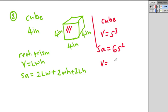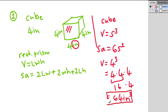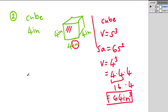For the volume we do V equals s cubed, which is 4 cubed: 4 times 4 times 4. Four times 4 is 16, and 16 times 4 equals 64. We can't forget units — the problem uses inches and since this is volume we use cubic units. So the answer is 64 inches cubed.